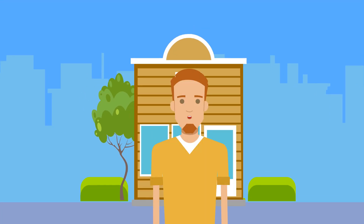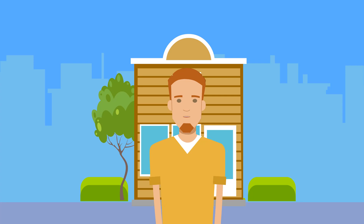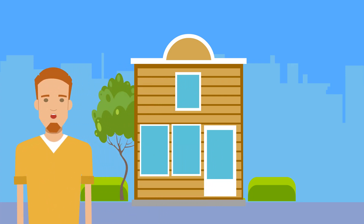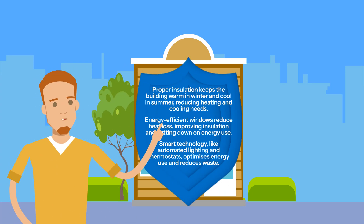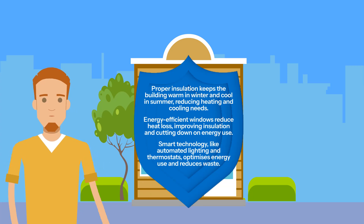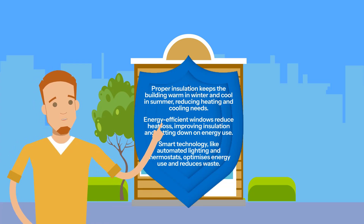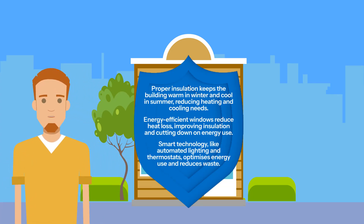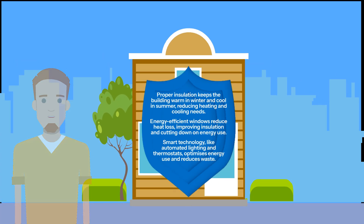Improving building energy efficiency is vital. ISO 14064 aids in assessing these initiatives' impact on your GHG inventory. Implementing green building practices like better insulation, energy-efficient windows, and smart technologies can lead to significant emissions reductions and long-term savings.